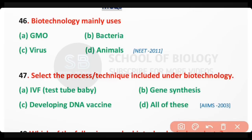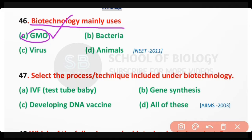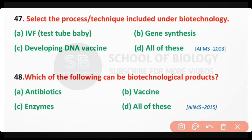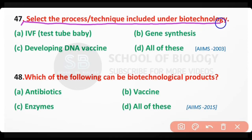Question number 46: Biotechnology mainly uses genetically modified organisms — bacteria, virus, animals? The correct answer is option A. Biotechnology mainly uses genetically modified organisms. Question number 47: Select the process or technique included under biotechnology — IVF test tube baby, gene synthesis, developing DNA vaccine, or all of these?